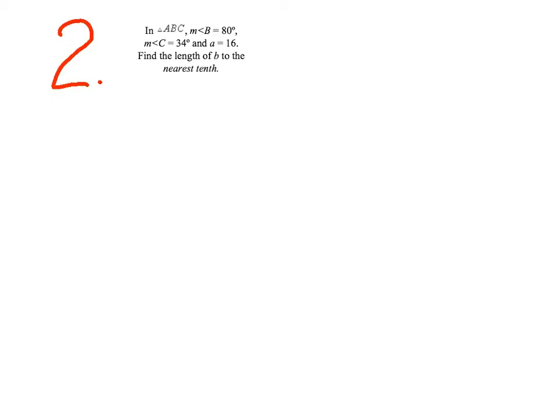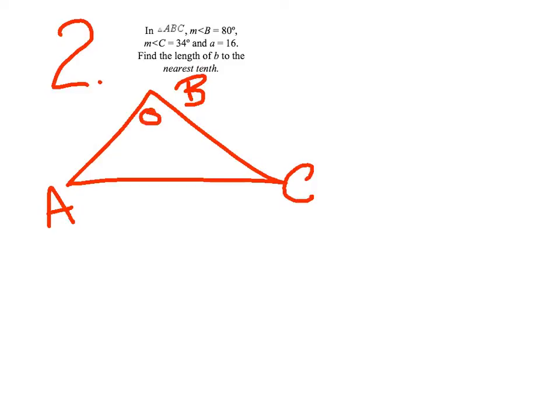Number two, in triangle ABC. So let's stop and draw a random triangle, not a right triangle. Label it ABC, it doesn't matter which ones you call ABC. Angle B equals 80. Angle C measures 34 degrees. Side A is 16. Find the length of B to the nearest tenth, so I'm going to put an x here.